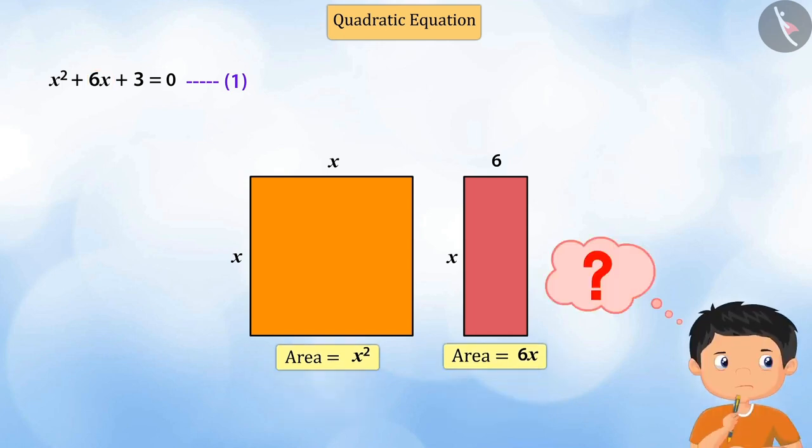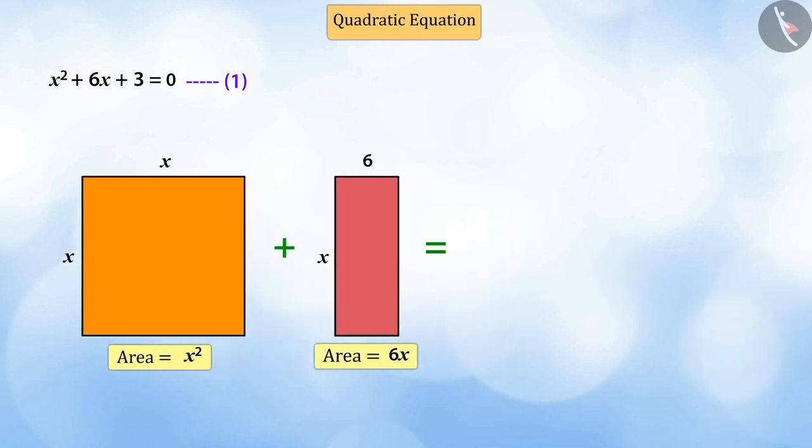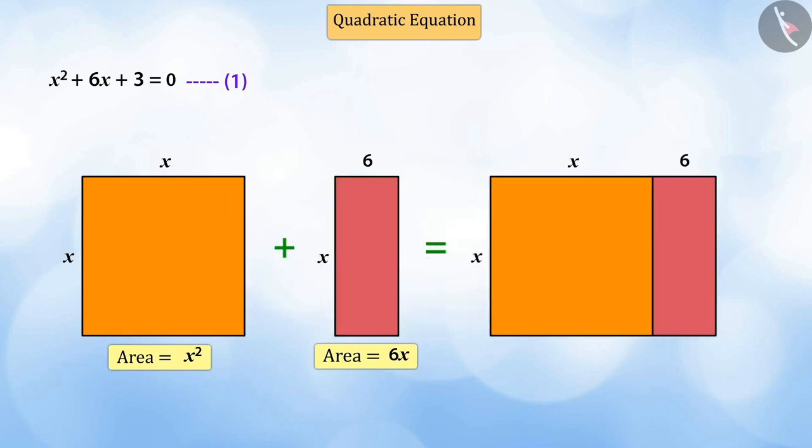Can you combine these two shapes to form a new shape? Well done. If we combine the given square and rectangle, we shall get a new rectangle whose area will be equal to the sum of the area of the square and the area of the first rectangle, which means that its area would be x to the power 2 plus 6x.